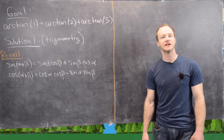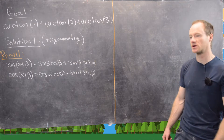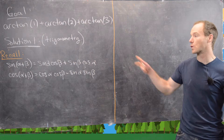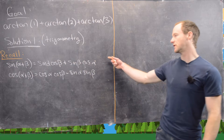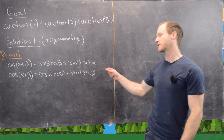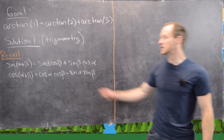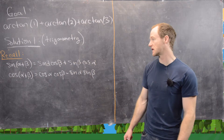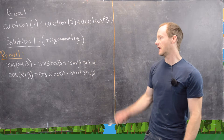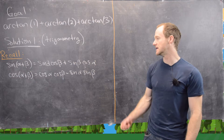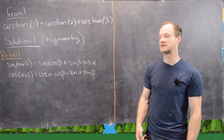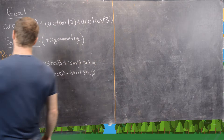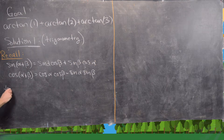We're going to use an identity that involves the inverse tangent function, but since it's not as common as some others, we're going to derive it from more common identities — specifically the sum angle formula for sine and the sum angle formula for cosine. Notice we can immediately put these together by dividing them to get a sum angle formula for tangent.